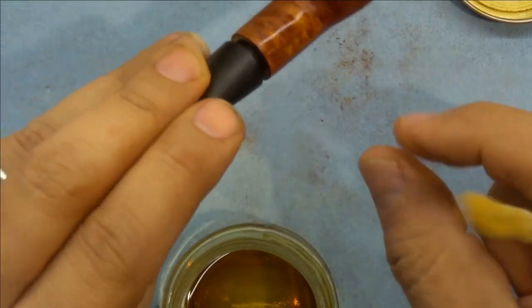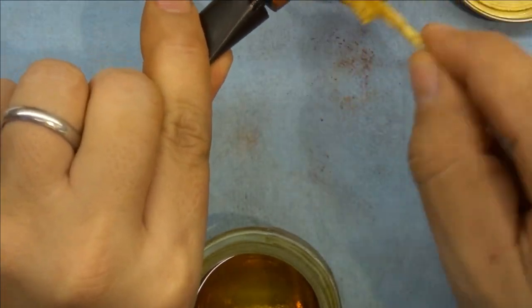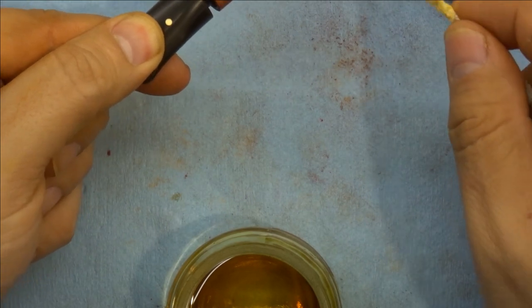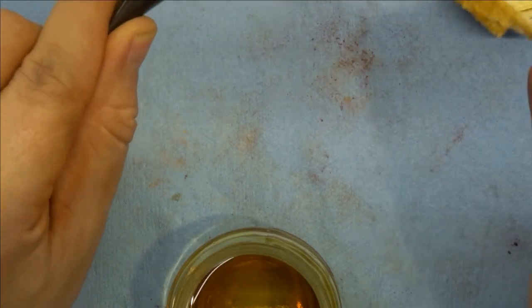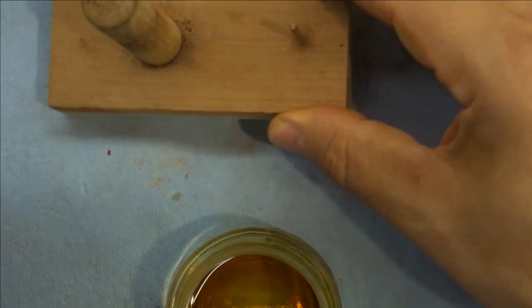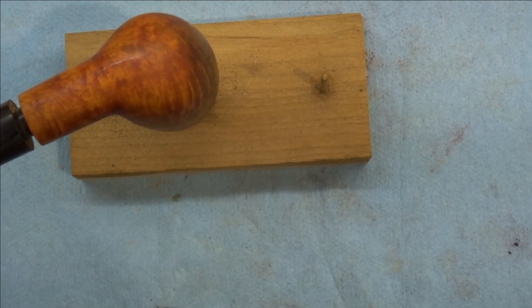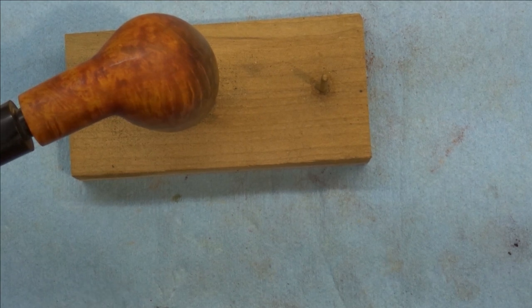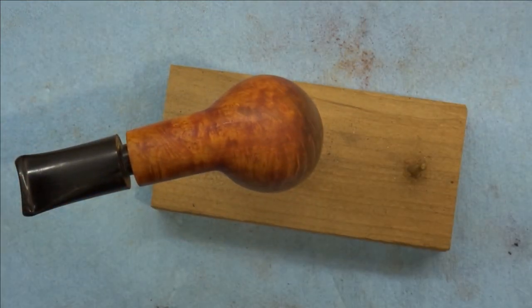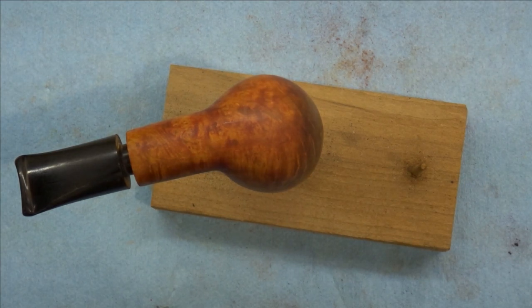The trick with staining is to realize that a lot of what you're putting on is not getting into the wood but just sitting on the surface, and you don't want that because it will come off when a person handles the pipe. Carnauba wax can protect it for a little while, but the goal is to remove the loose stain and just leave what has actually sunk into and bound to the wood.